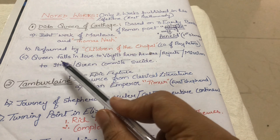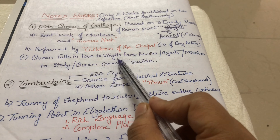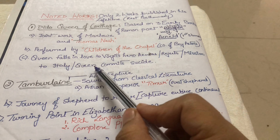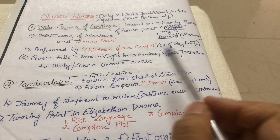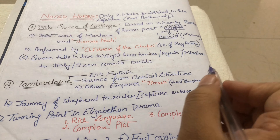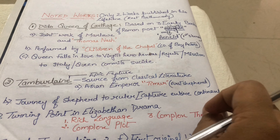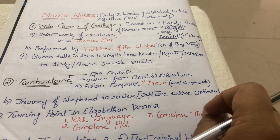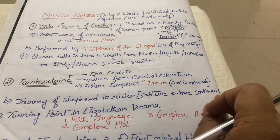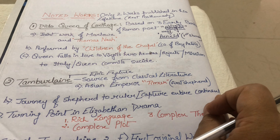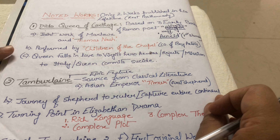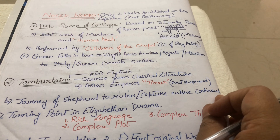In the play, the queen falls in love with Virgil's hero, Aeneas. Aeneas rejects her love and goes on his mission to Italy, and because of this the queen commits suicide. So in short, Dido Queen of Carthage shows the queen falling in love with Virgil's hero, who rejects her and leaves, causing her to commit suicide.